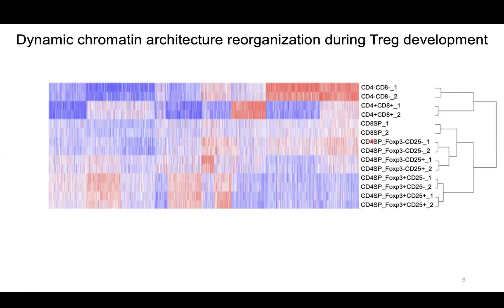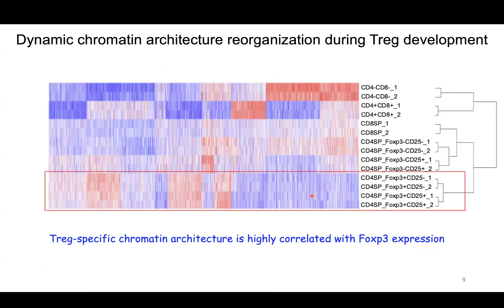Notably, the last four columns—CD4 single-positive FOXP3-positive CD25-negative Treg precursor, and the FOXP3 and CD25 double-positive mature thymic Treg cells—when compared with other T-cell populations, these two cell types show very similar chromatin interaction patterns, distinct from other populations. This dataset indicates that Treg-specific chromatin architecture is highly correlated with FOXP3 expression, and FOXP3 may have an important role in establishing the Treg-specific chromatin organization.